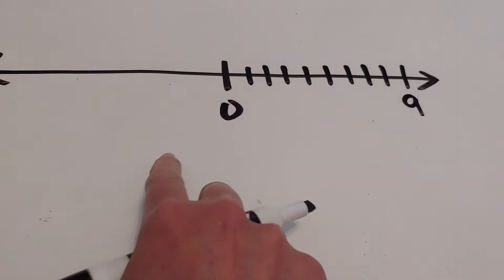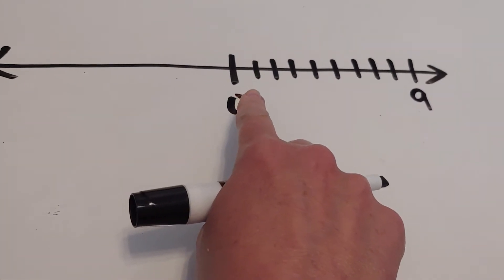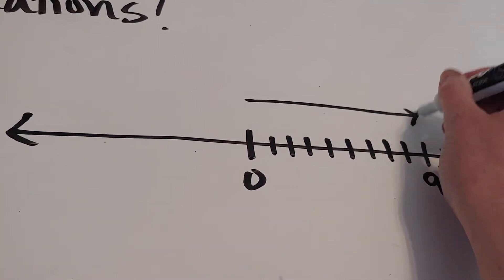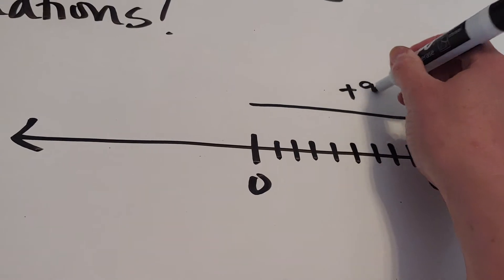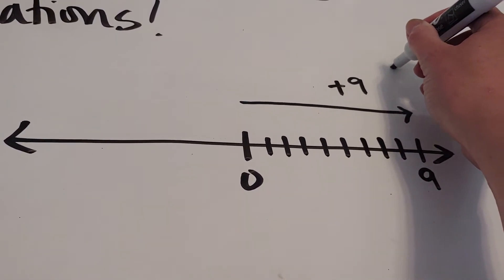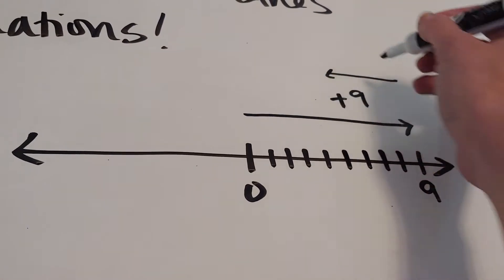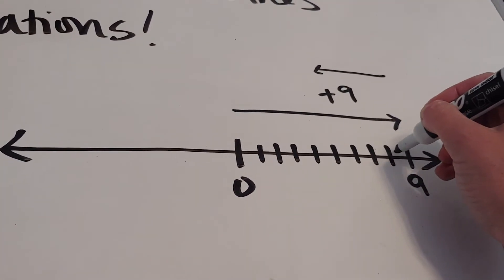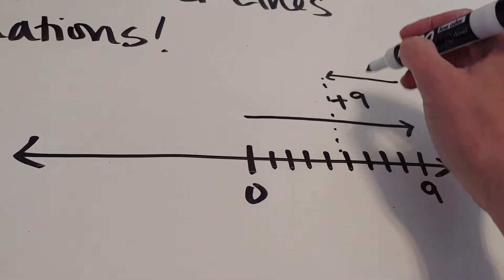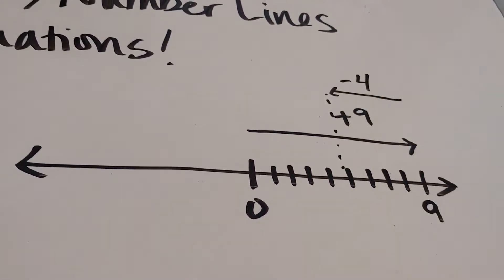Anytime you have a positive, you draw an arrow to the right. So I have positive nine. From there, I'll come backwards four. Let me line up: one, two, three, four. Now I'm coming backwards four.